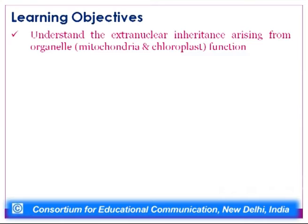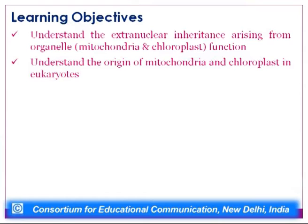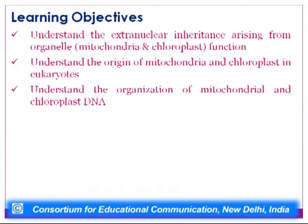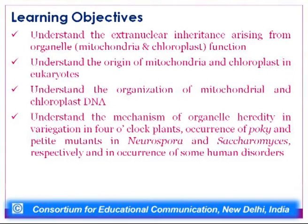Today the topic of my talk is extra nuclear inheritance. Inheritance is the passing of traits from one generation to another, and today we will talk about the mechanisms of transmission of traits by anything which is extra nuclear. The learning objectives for this session include understanding extra nuclear inheritance arising from organelle function — the mitochondria and the chloroplast — their origin in eukaryotes, organization of their DNA, and the mechanism of organelle heredity through examples such as variegation in four o'clock plants, poky and petite mutants in Neurospora and Saccharomyces, and human disorders.